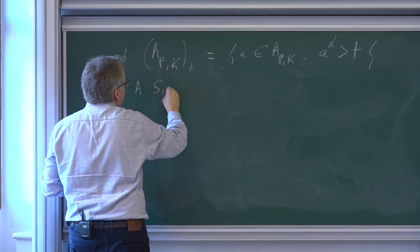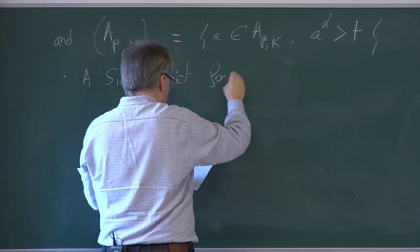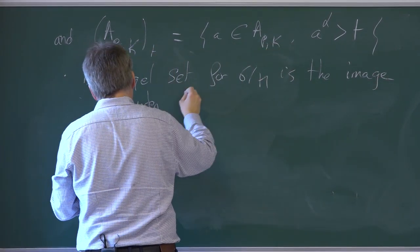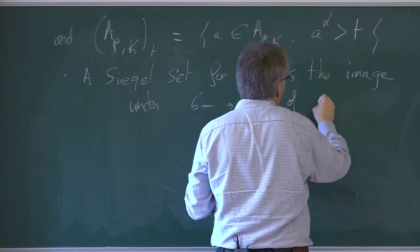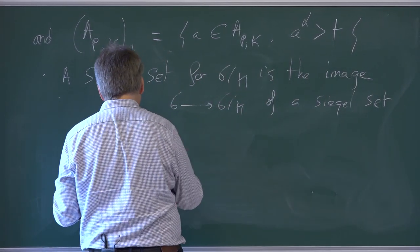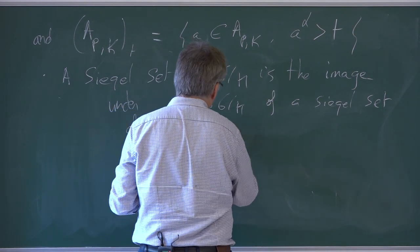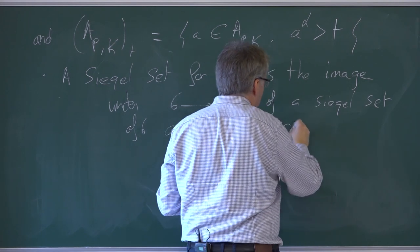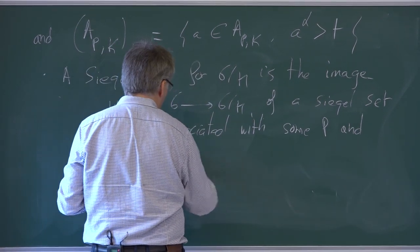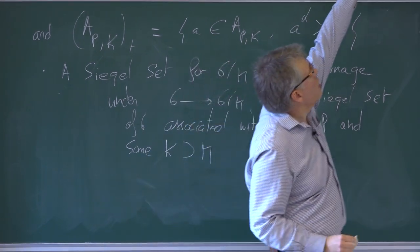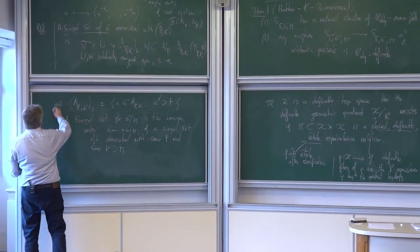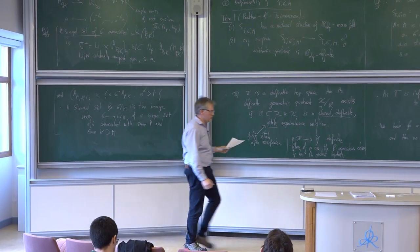A Siegel set in G/M is the image under G → G/M of a Siegel set of G associated with some parabolic P and some K containing M. As a concrete example in SL₂/SO₂ = H (the upper half-plane), a Siegel set is given by fixing 0 ≤ x ≤ 1 and y > T for some T > 1. There is only one root since you are in rank 1.